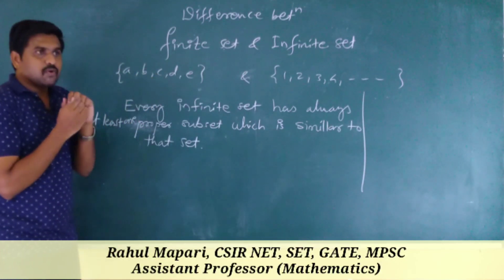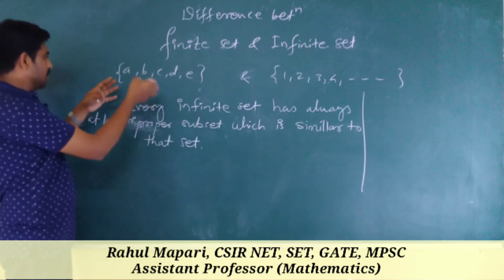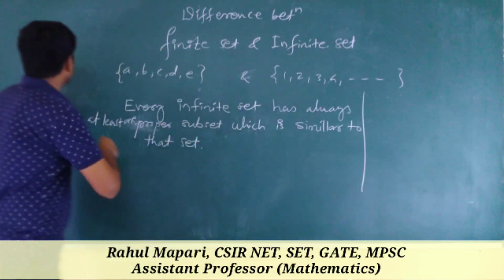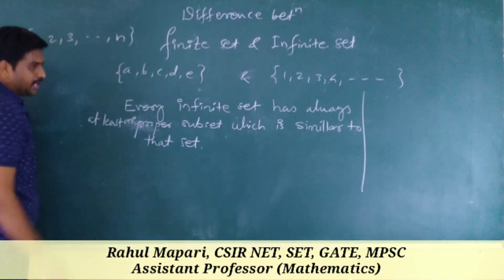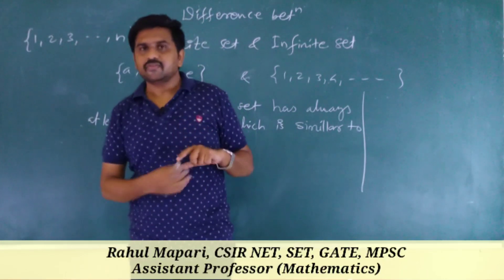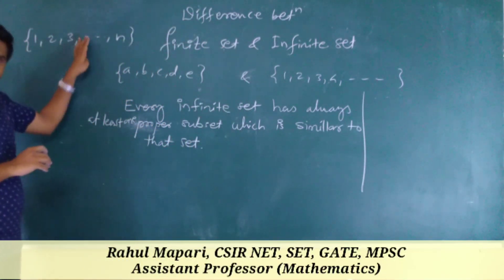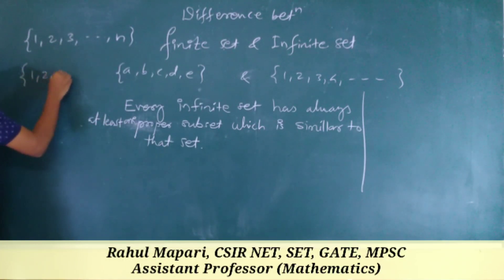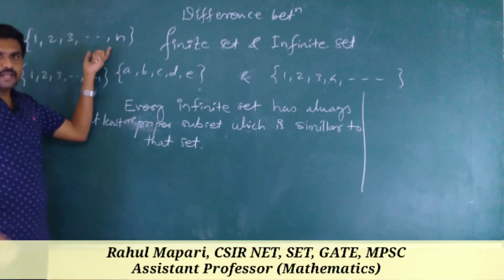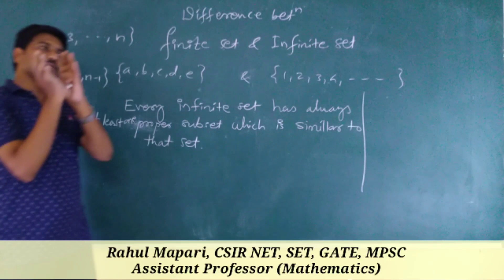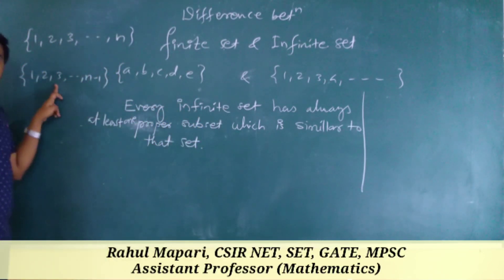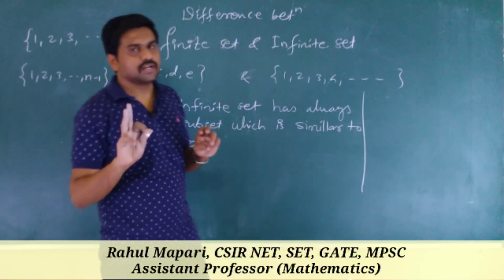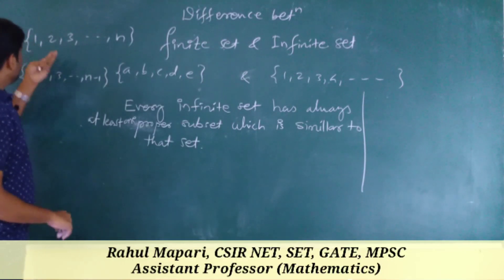If we take a finite set like {1, 2, 3, ..., n} and want to take a proper subset, we must remove at least one element. So the proper subset has n−1 elements. Now, for two sets to be similar, there must be a one-to-one correspondence between them. A set with n elements and one with n−1 elements are not similar. And the set itself is not a proper subset of itself.